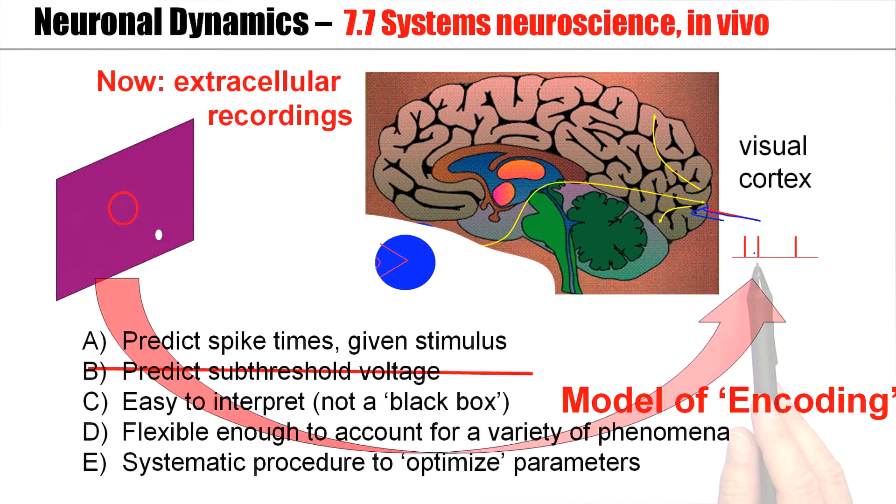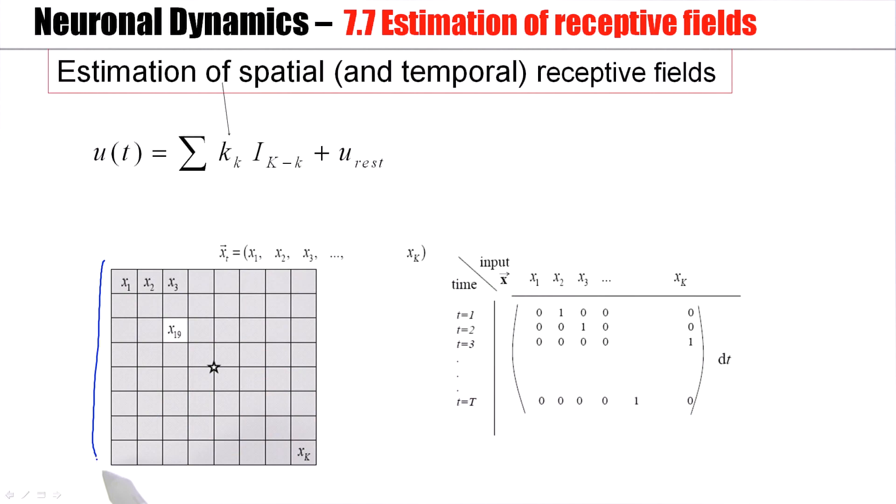Now for receptive fields, we have a spatial receptive field. So this is the screen, and the light dot may occur wherever, for example in the field number 19. So the input vector is now a spatial vector, and a single stimulus at time 1 might be that the light sits here, in time 2 it might be the light is here, in time k it might be that the light is down here, and somewhere in between it's here. It's randomly moving around. One instantiation of the stimulus is a vector x with many zeros and a single one. That's where the light point sits.